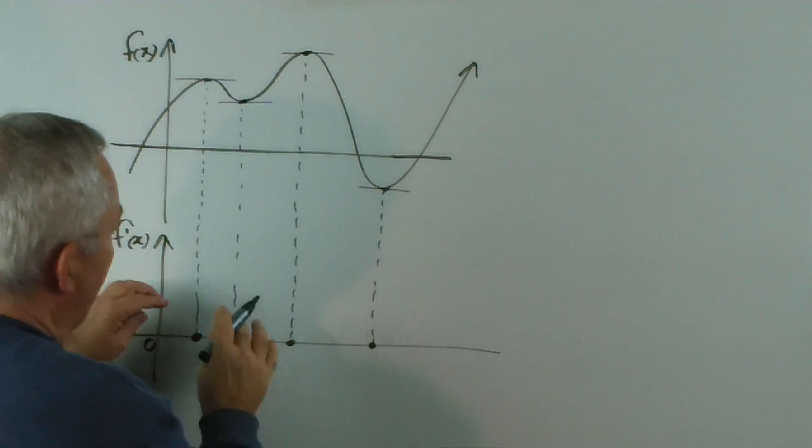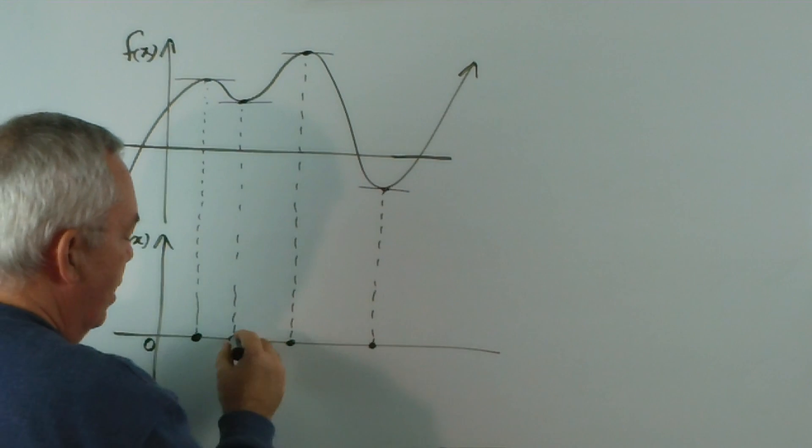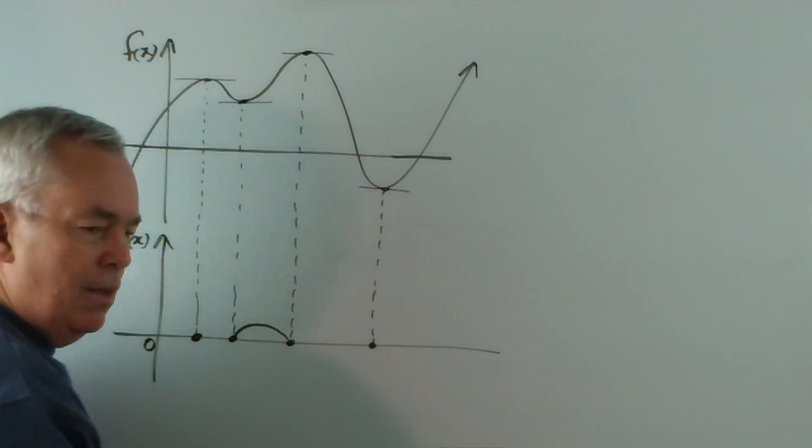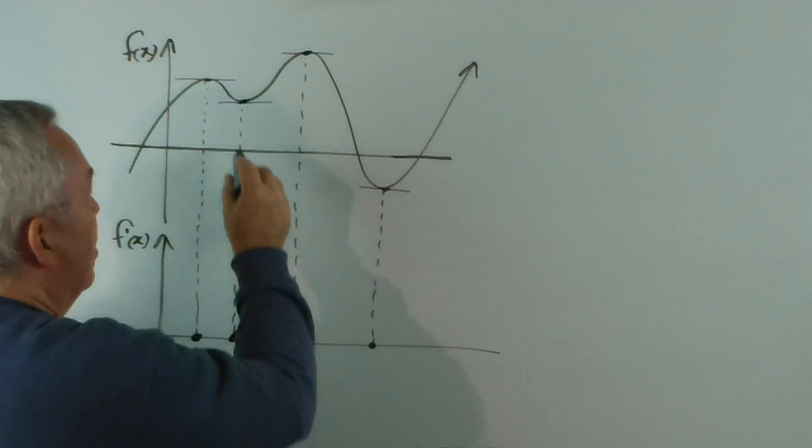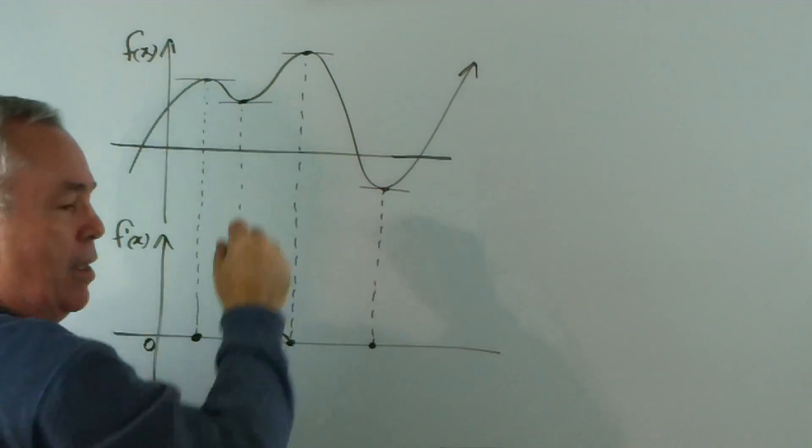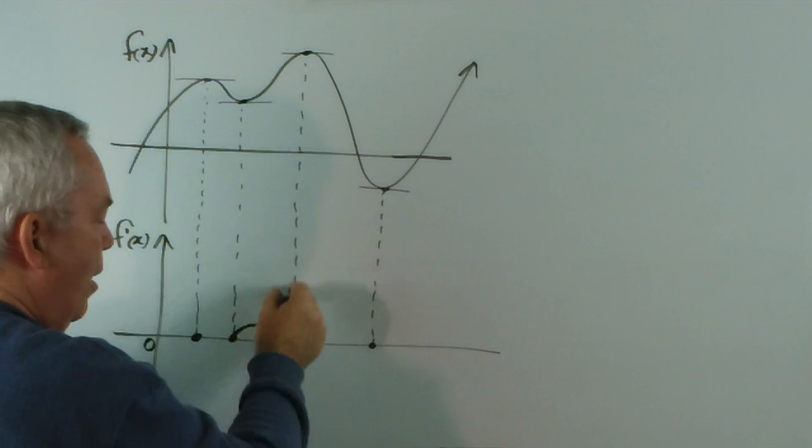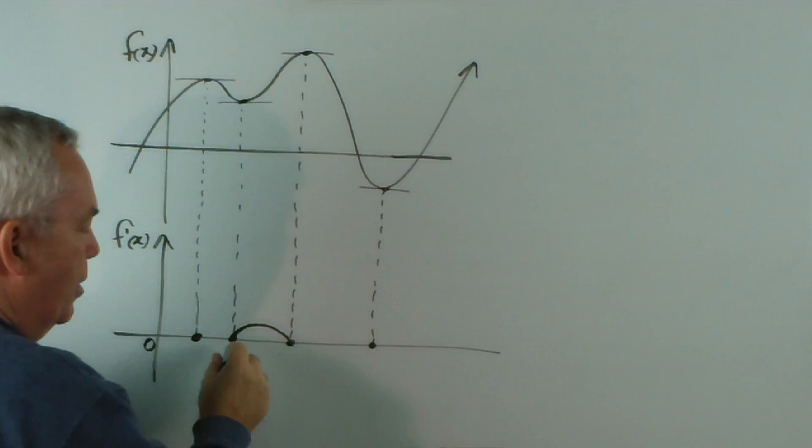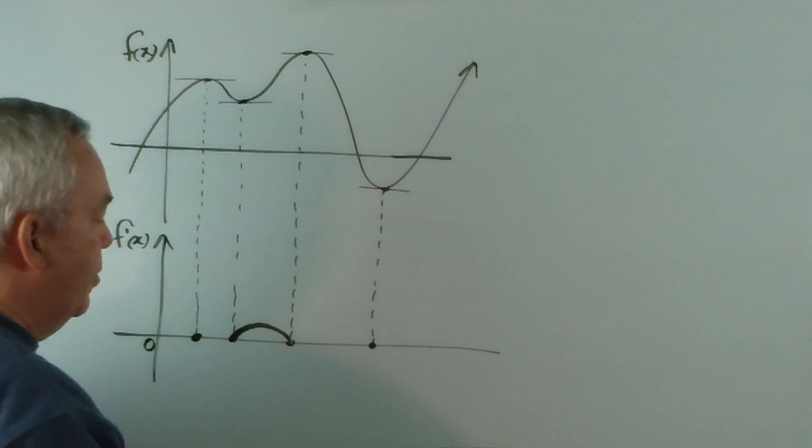And that means that if I'm graphing the gradient function, I need positive values from here to here. Hence, my graph will go up and down. It must be continuous because this graph is continuous and everywhere differentiable. And I don't know how high or how low it goes or whether it's slightly lopsided, slightly skewed or not, but I do know it must go up into the positive region.